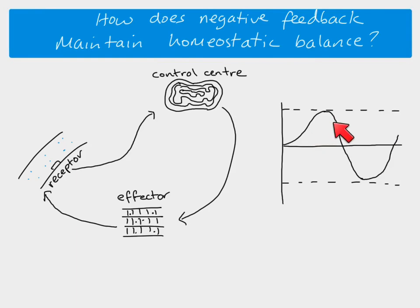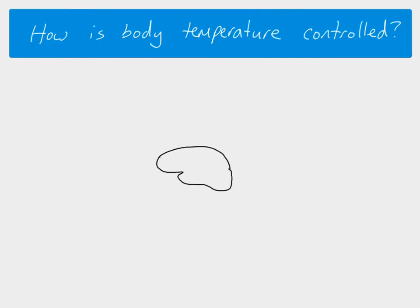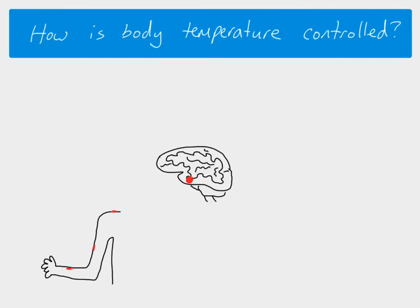So homeostasis is maintained through this negative feedback: the factor goes up, something brings it down; the factor goes down, something brings it back up — always fluctuating about the set limit. Looking at temperature control in more detail: in the brain is where the hypothalamus is located, and the hypothalamus is the temperature control center in the body, where the thermoreceptors are.